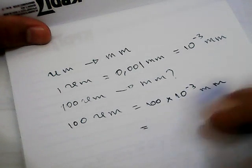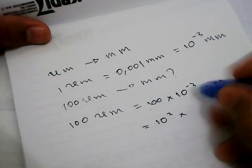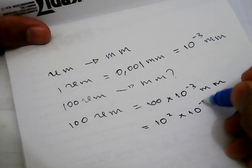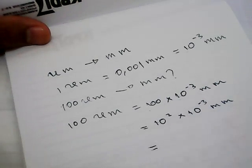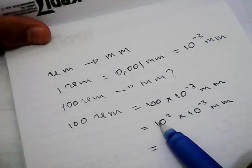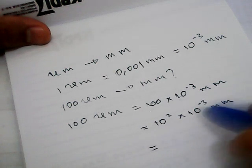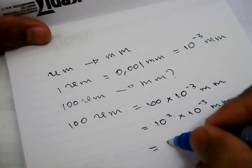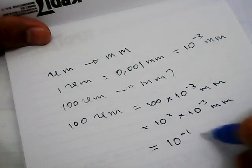This one is equal to 10 power 2, and this is 10 power minus 3 millimeters. It's equal to 10 power minus 1 millimeters.